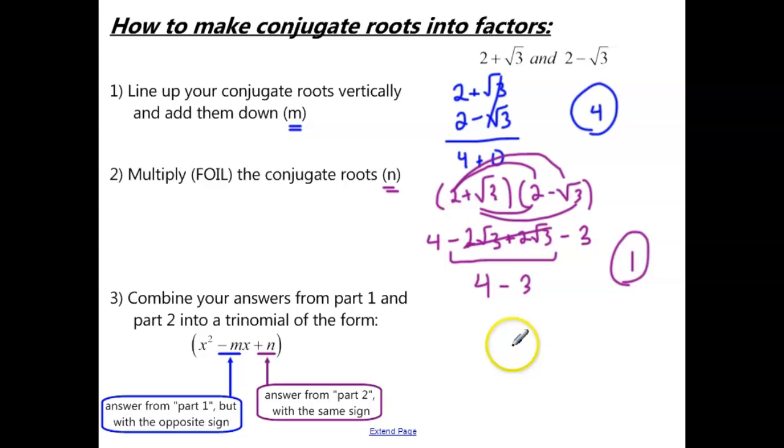So in part 3, we need to combine the answers from part 1 and part 2 into a trinomial of this form. So I'm going to go ahead and start by writing x squared, and then I'm going to put in x, and then close my parentheses.